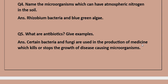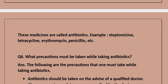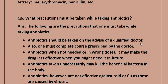Question 5: What are antibiotics? Give examples. Answer: Certain bacteria and fungi are used in the production of medicines which kill or stop the growth of disease-causing microorganisms. These medicines are called antibiotics. Examples: streptomycin, tetracycline, erythromycin, penicillin, etc.